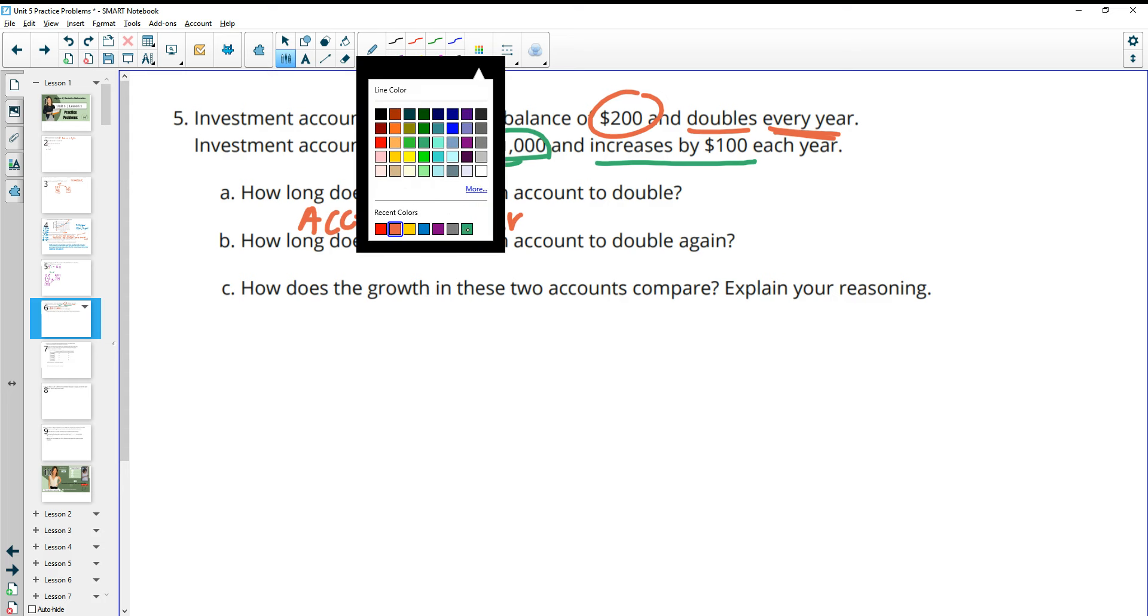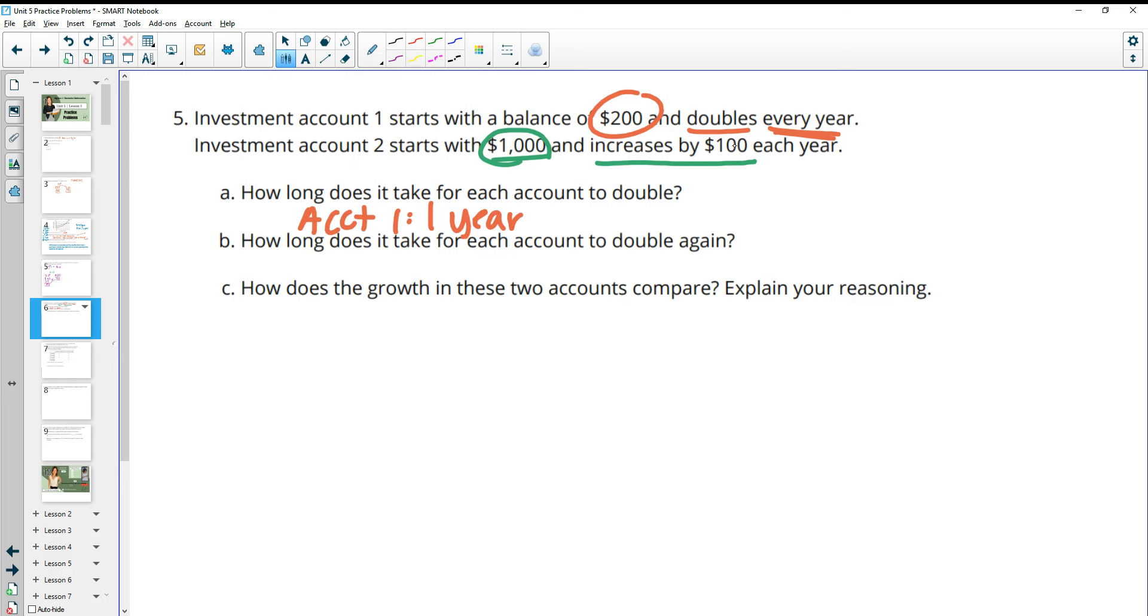For account 2, it's increasing by $100 each year. So this means that we need to figure out when it's going to go from $1,000 to $2,000, which means that it's going to add $1,000. And it's $100 every year. So if we divide this by 100, that's going to be 10 years. So for account 2, it's going to take 10 years for this one to double, or 10 years for it to add an additional $1,000.